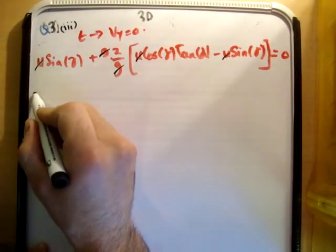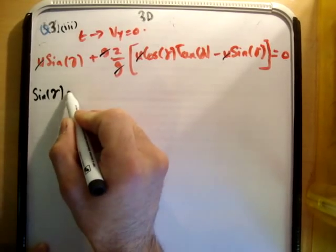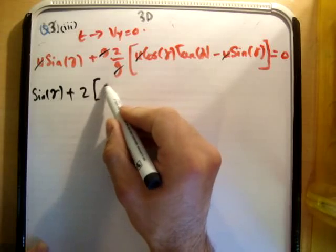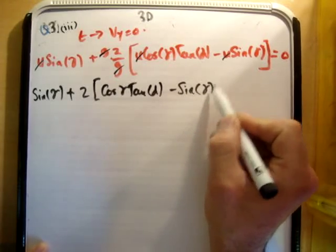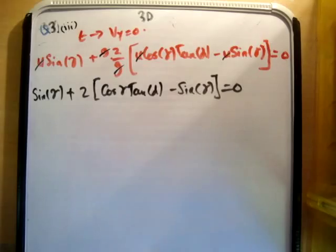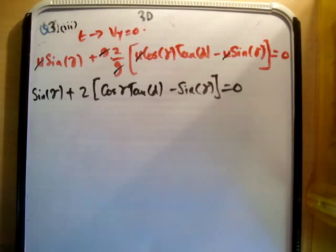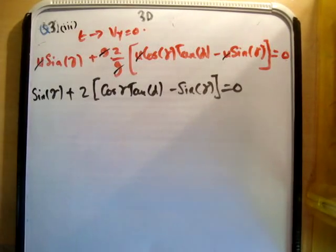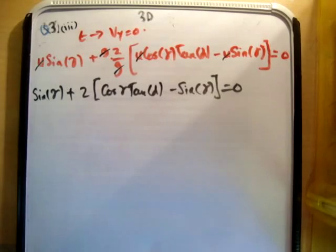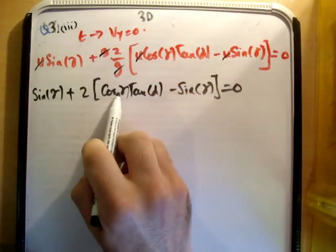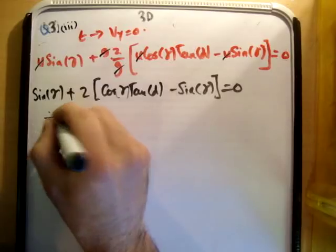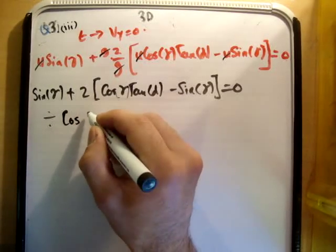What we're left with is sine of gamma plus 2 times cos gamma times tan alpha minus sine of gamma equals zero. Now we need to convert to tan form. Since the answer involves tan theta, and we already have tan alpha, we need to convert the sine and cosine terms. The easiest way is to divide across by cos gamma — this turns the sine terms into tan terms. So we divide by cos gamma.